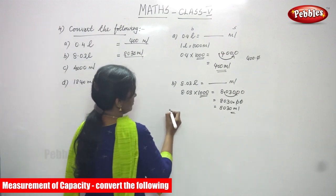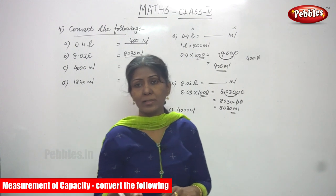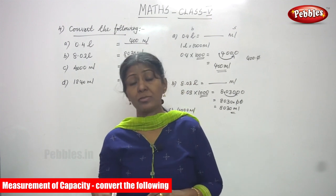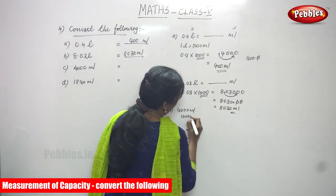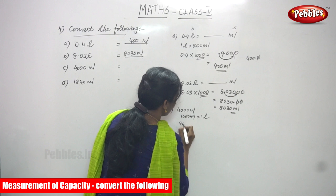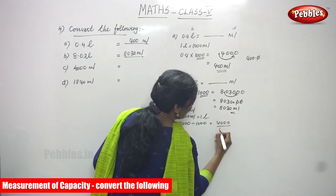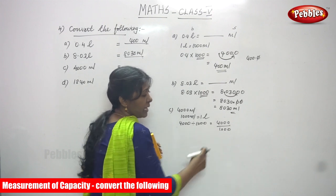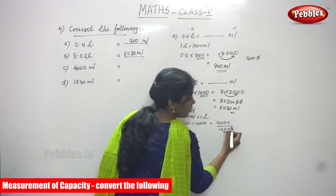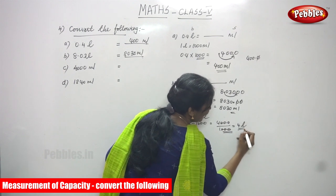Next, the third sum: 4000 milliliters — convert into liters. Milliliter is a smaller unit and liter is a bigger unit. Smaller to bigger means you divide by 1000. Since 1000 ml equals one liter, do 4000 divided by 1000. From the right, there are three zeros in 1000, so cancel three zeros, giving 4 divided by 1, which is 4 liters.